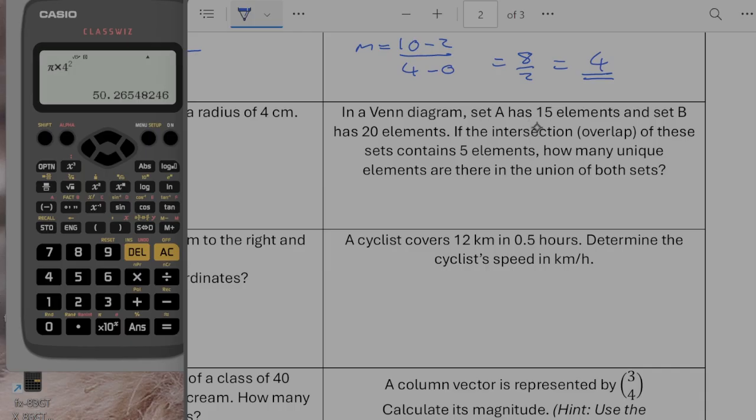In a Venn diagram, set A has 15 elements. Set B has 20 elements. If the intersection, the overlap of these sets contains 5 elements, how many unique elements are there in the union of both sets? Well, that means that I've kind of got, we will put it in. So we've got 5 in the intersection. If there are 15 elements in set A, it must mean that there are 10 unique values just in set A but not in B. And then likewise 15 there. So we've got a total of 30 elements in the union.